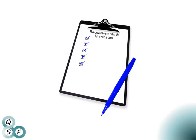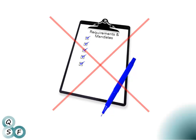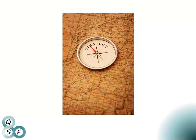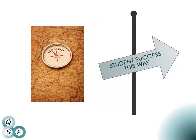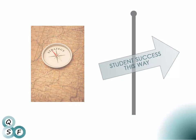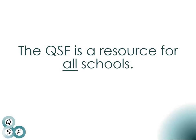Unlike past supports, the Quality Schooling Framework, or QSF, is not a checklist of requirements or mandated activities. Instead, you can think of it as a map and a compass to help you focus on your destination and plan your route to student success. It is a resource for all schools.